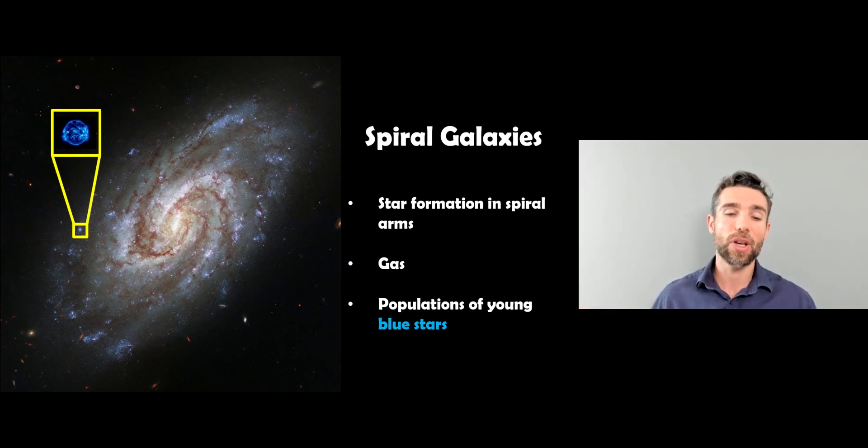They have density waves which collapse the gas as it goes in, that then initiates star formation. So you generally find that star formation occurs in the arms themselves. Spiral galaxies have an abundance of gas, so they can have star formation. As they evolve, they do lose their gas, but generally they have gas, which is different to elliptical galaxies, which don't have gas.